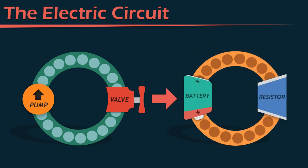A simple electric circuit is a lot like the simple hydraulic circuit we've just looked at. The pump is correlated to the battery, the valve is similar to something called a resistor, and the water-filled pipes are similar to the conducting wires in an electric circuit. They are quite similar, and we're going to take a look at all of those and see how they're the same.